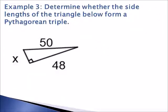Let's look at example three. Determine whether the side lengths of the triangle below form a Pythagorean triple. What's different about this example is we know our hypotenuse and we actually need to determine the length of one of the legs.